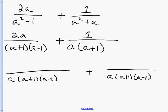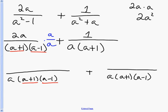We're comparing what we have versus what we're missing. For the first fraction, I already have (a+1) and (a-1), so what I'm missing is the factor of a. I have to multiply the top and bottom of this fraction by a. The denominator becomes a(a+1)(a-1), and I multiply the numerator: 2a times a gives me 2a squared.